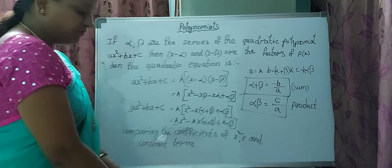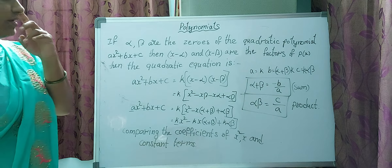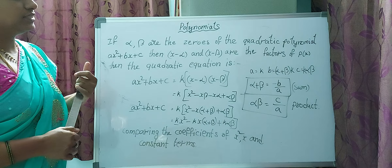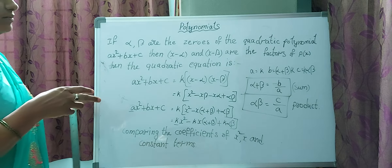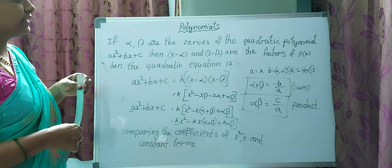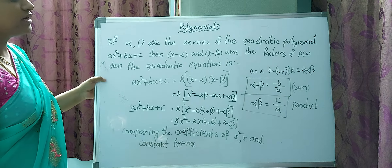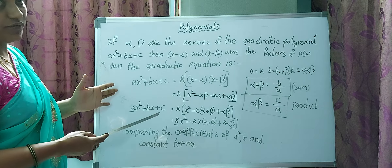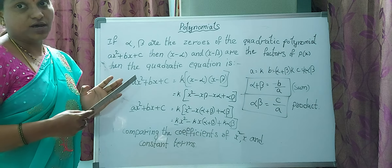Good evening, children. Yesterday we discussed the zeros of the quadratic polynomial — the sum and product of zeros — and compared them with the coefficients of the quadratic equation. Today we are going to see how to form a quadratic equation when we have the sum and product of the zeros.